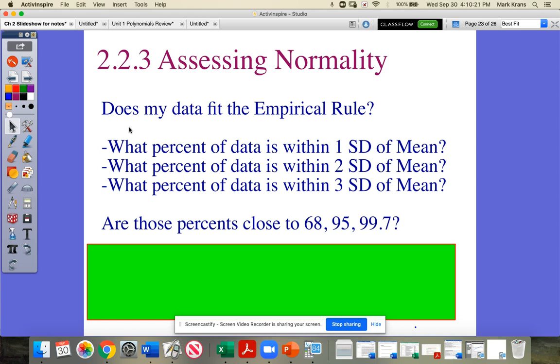Last section is on assessing normality. The question about assessing normality is, is my data normal? How can we tell that if we're looking at a data set? Well, you can look at a histogram and that gives you a pretty good idea, but there's two other methods that we have.